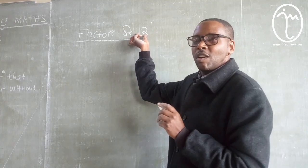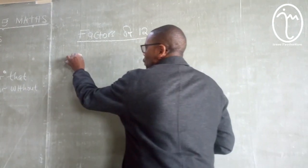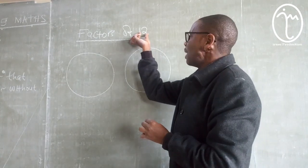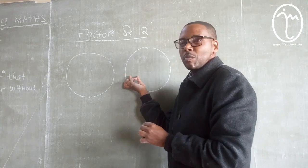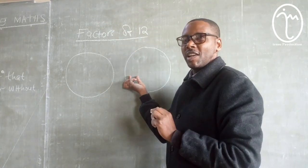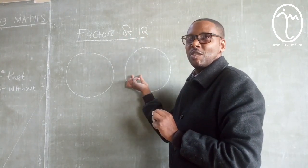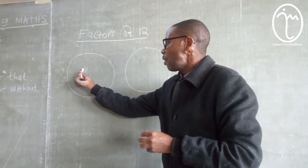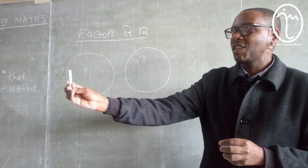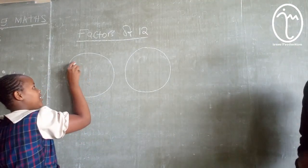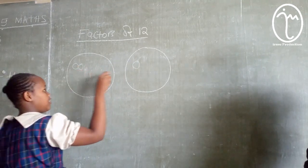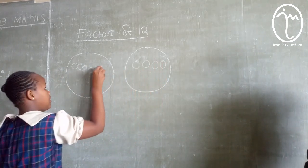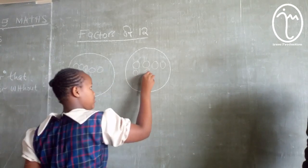We need to check whether 2 is a factor of 12. We are going to have 2 baskets. Assuming these are apples, we are going to share these apples into 2 baskets to see whether they will be equal. You need to come and try to put the 12 apples into these 2 baskets — group them into 2. As she puts them in, we count together: 1, 2, 3... all the way to 12. Good, clap for her.